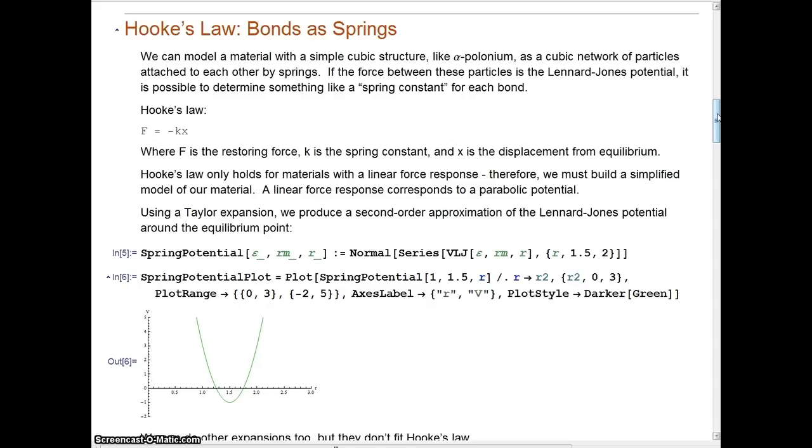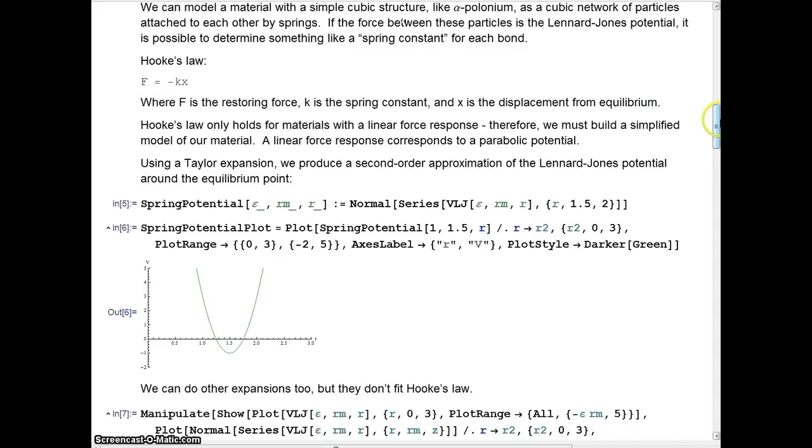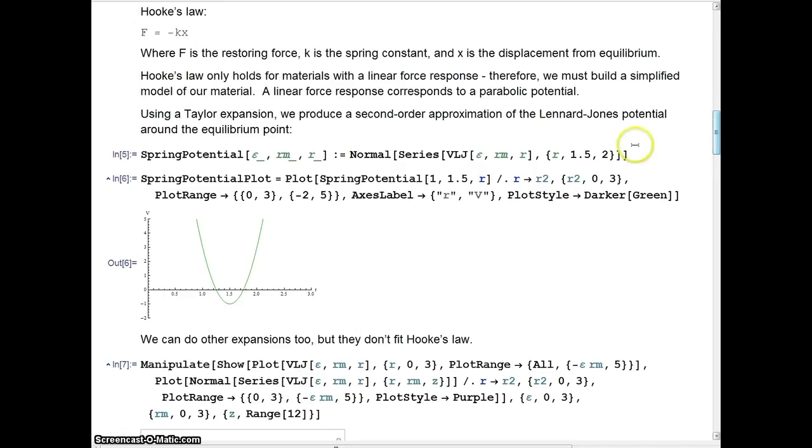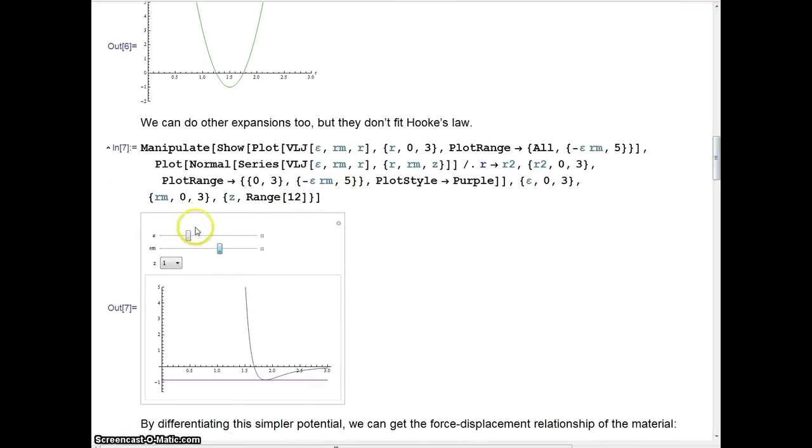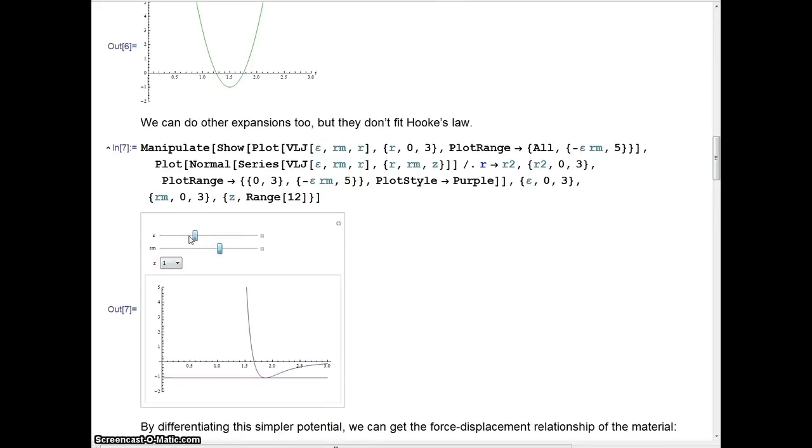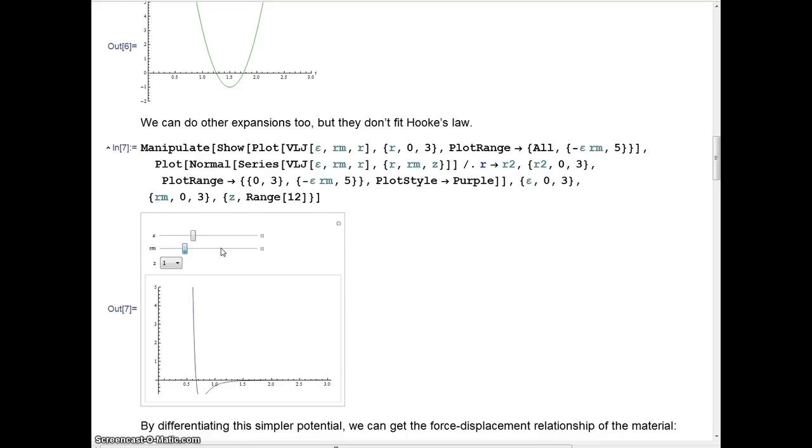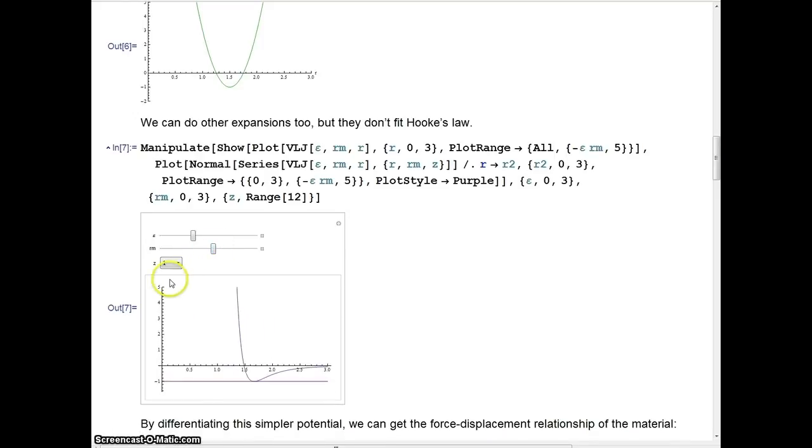So, what I've done is I've used Mathematica and its wonderful math tools to take the Taylor expansion about that equilibrium point. You can see here, this is the second-order Taylor expansion, so it's a parabola. If you look at this manipulate here, I've set it up so you can adjust the potential well depth, choose the equilibrium distance, and look at different order Taylor expansions. That's the first order, it's a line. The second order is a parabola, that's what we're going to be using.